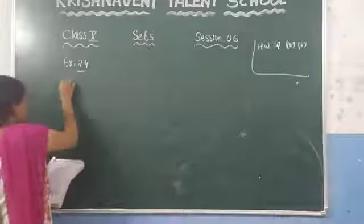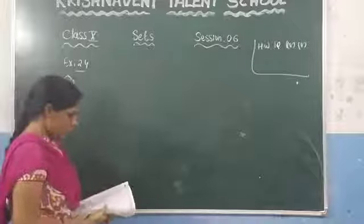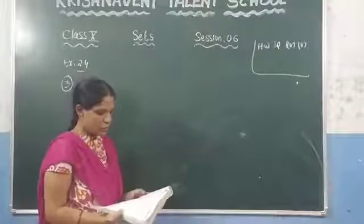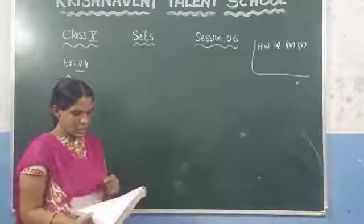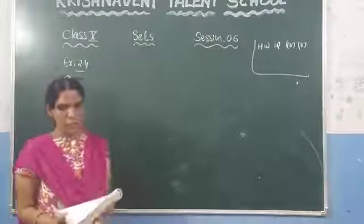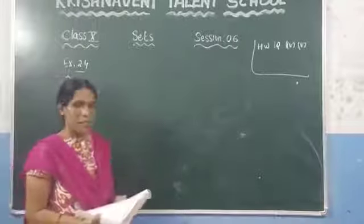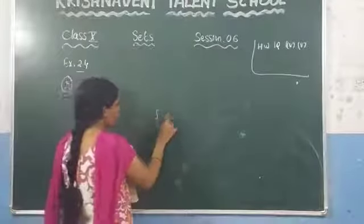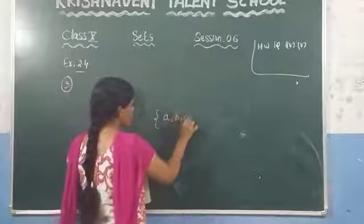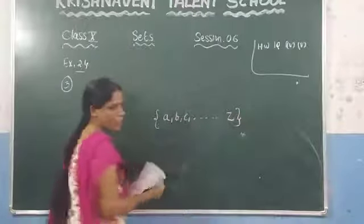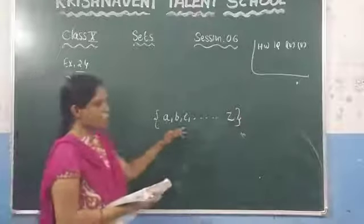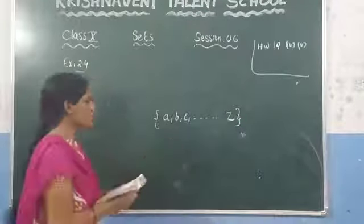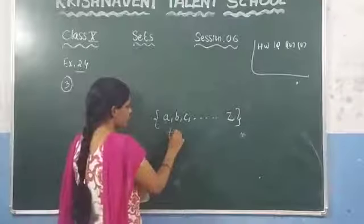See the third question: state which of the following sets are finite or infinite. The first question is the set of letters in the English alphabet. You know that in the English alphabet you can count the letters — A, B, C, and so on. So we can say that it is a finite set, because we can count the number of elements present in the set.